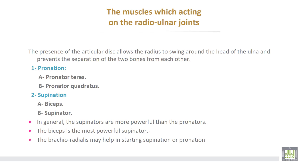The muscles acting on the radio-ulnar joints: the presence of the articular disc allows the radius to swing around the head of the ulna and prevents the separation of both bones from each other.